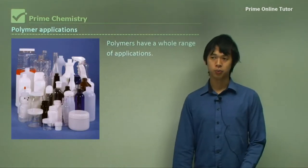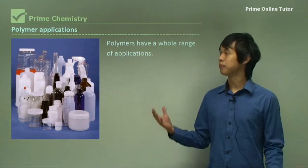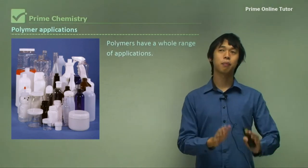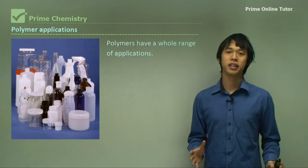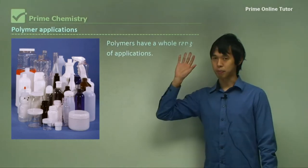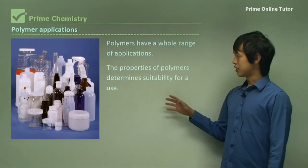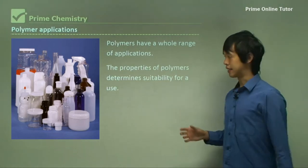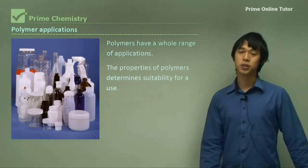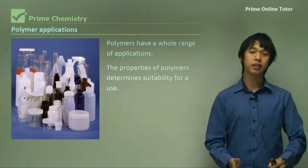So where do we use polymers? Pretty much everywhere. If you think of anything plastic in your life, that has a polymer in it. Polymers have a bunch of applications, and plastic is just one of many. The property of a polymer — the way it handles certain conditions — determines what we use it for, just like different metals have different properties.